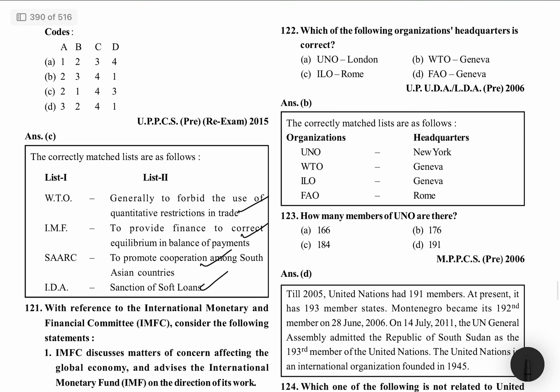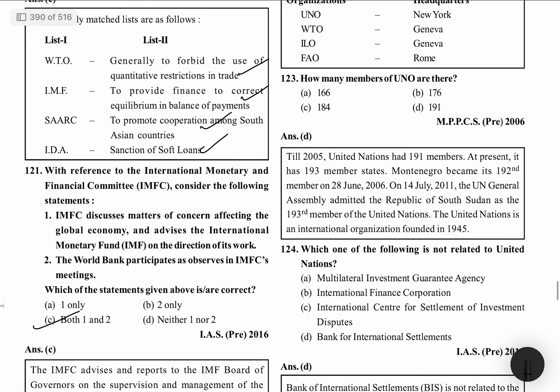Which of the following organization headquarters is correct? UNO — London, WTO — Geneva, ILO — Rome, FAO — Geneva. ILO's headquarter is in Geneva and FAO's is in Rome, so those options are wrong. UNO's headquarter is in New York, so that is also wrong. The correct one is WTO, whose headquarter is in Geneva.